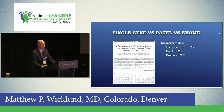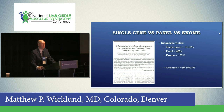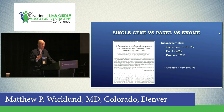Probably in the next year or two we'll be moving to genome sequencing. There are different types of genomes, and the yield will probably be in the 50% range — and as genomes improve, closer to 70% or 80%.